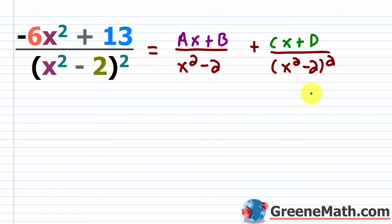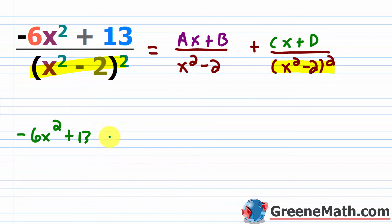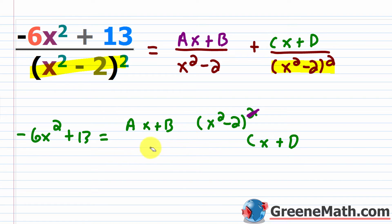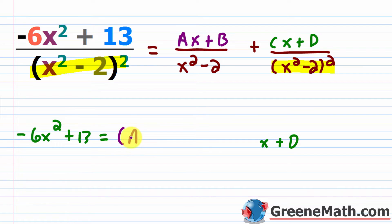Once you have this setup, you're just doing algebra. I'm going to multiply both sides by the LCD, which is x squared minus two, quantity squared. That cancels with the denominators on the right side. So I would have negative 6x squared plus 13 equals cx plus d, plus the quantity ax plus b times x squared minus two.